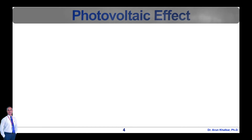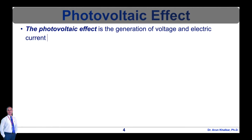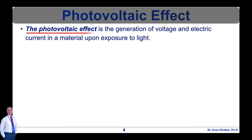Now let's see what the photovoltaic effect is. The photovoltaic effect is the generation of voltage and electric current in a material upon exposure to light. It is a physical and chemical phenomenon. In either case, light is absorbed causing excitation of an electron or other charge carriers to a higher energy state.